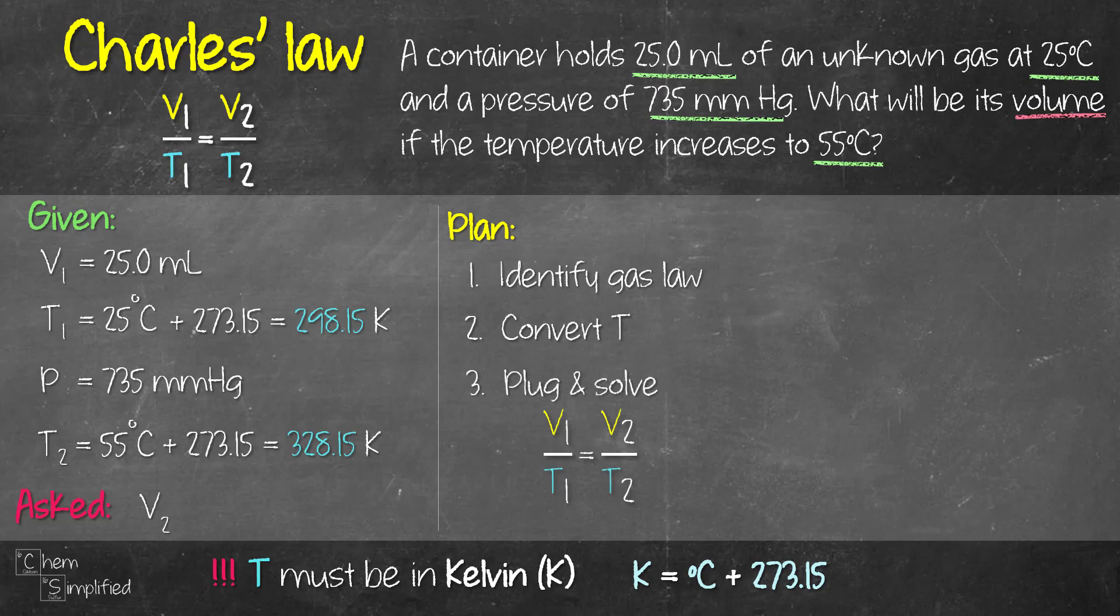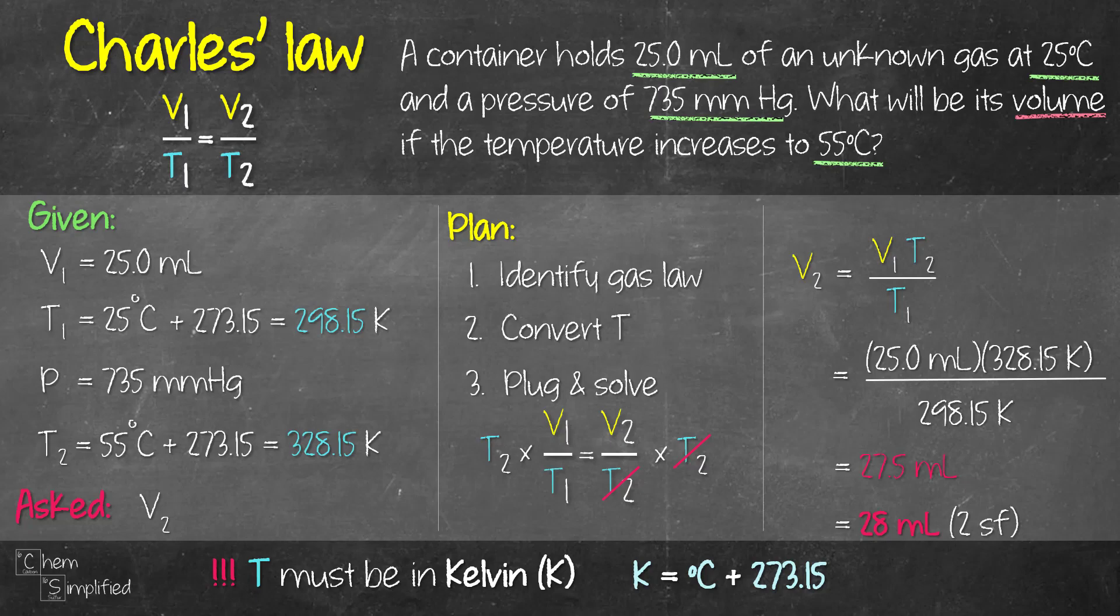Since we're solving for V2, let's do a little bit of math and then we rearrange the formula. So we multiply both sides with T2 so that we can get rid of T2 on the right hand side and that's going to give us V2 which is what we want to find. So V2 equals V1 times T2 divided by T1. Now we can literally plug all the information that we have tagged into our new formula and that's going to give us 25 mL times 328.15 Kelvin divided by 298.15 Kelvin and that comes out to be 28 mL in two sig figs.